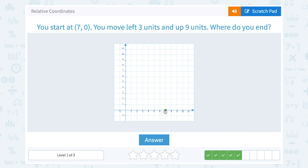So from here we're going to go left. 1, 2, 3, and then up 1, 2, 3, 4, 5, 6, 7, 8, 9.